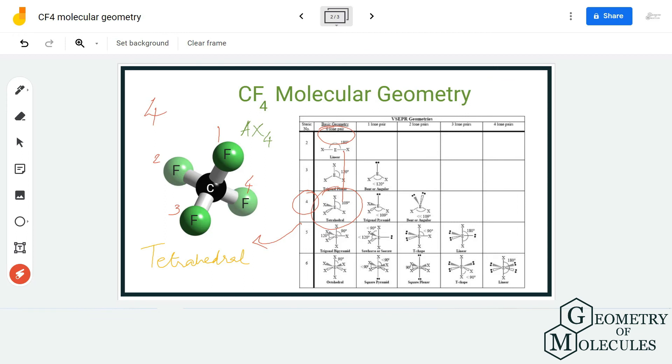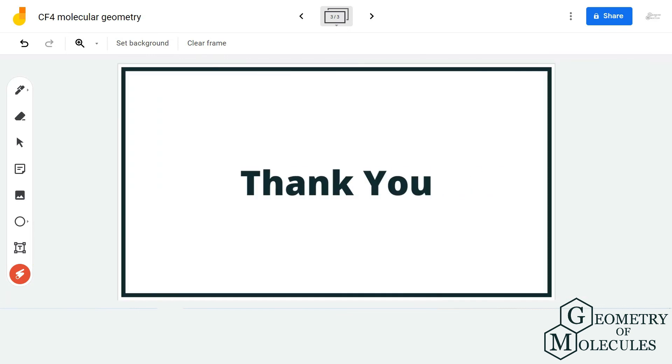I hope this video helps you to understand the molecular geometry of CF4. The molecule has a bond angle of 109.8 degrees. For more such videos on Lewis structure, molecular geometry, and polarity of molecules, make sure to subscribe to our channel. Thanks for watching!